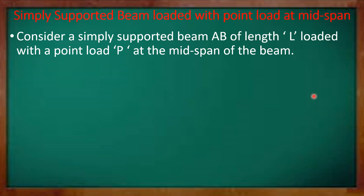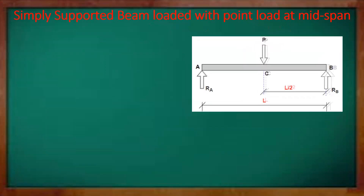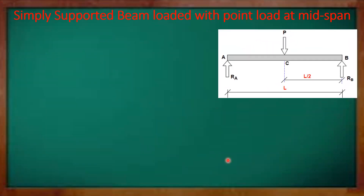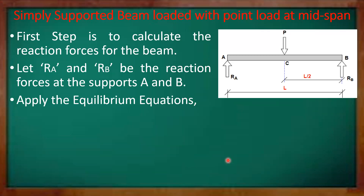Here we consider a simply supported beam with two supports A and B having length L, which is loaded with a point load at the mid-span of the beam at point C. To solve this type of simply supported beam we first need to find the reaction forces. We have R_A as the reaction force at support A and R_B as the reaction force at support B. We apply the static equilibrium equation — all vertical forces sum to zero — so we add up all the upward forces R_A and R_B and equate them to the downward force P.